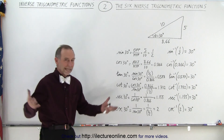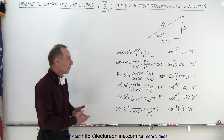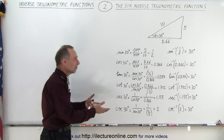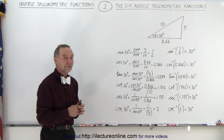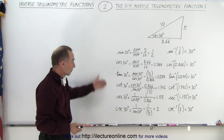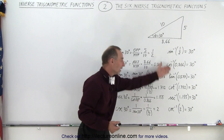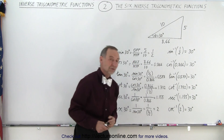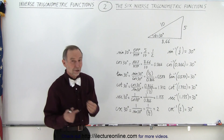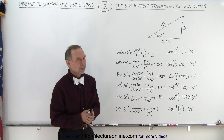Of course it's not just for the angle of 30 degrees — it could be any angle. But this gives you a feel that indeed for all six trigonometric functions we have six inverse functions. You plug in a number, you get back the angle.